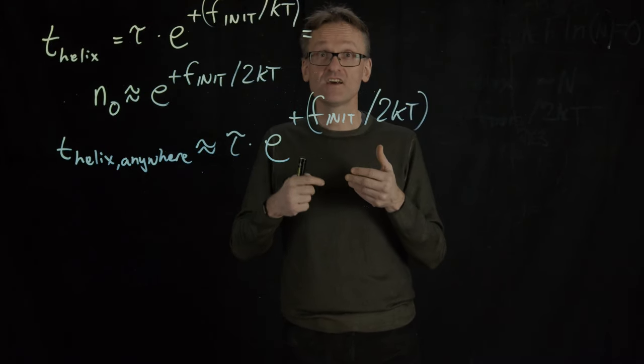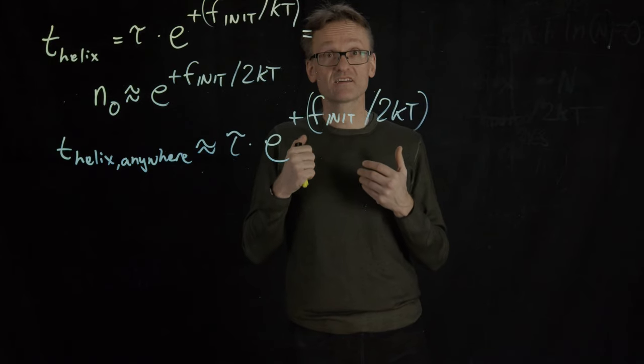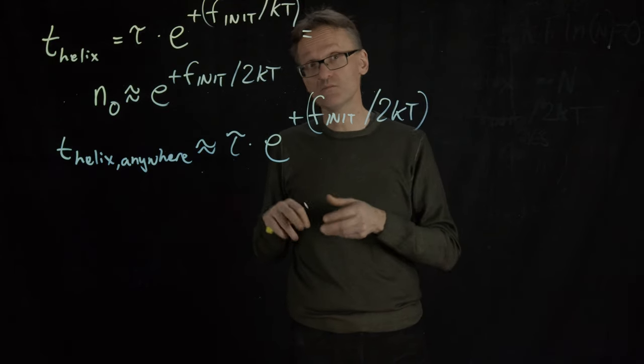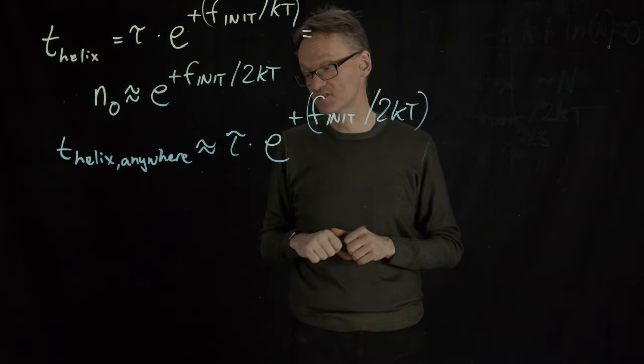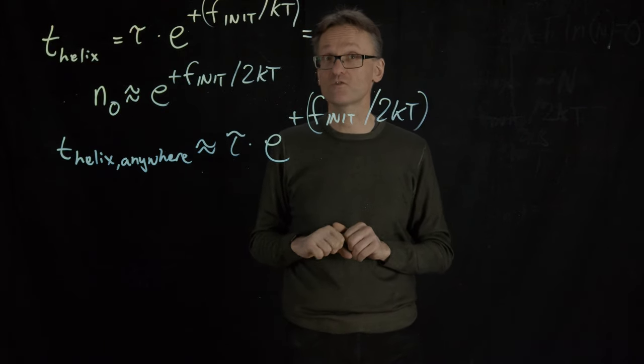But this is about understanding. When we get to beta sheets in particular, you will see that the important thing is going to be to understand the differences that correspond to 5 or 10 orders of magnitude, not the factor of 2.